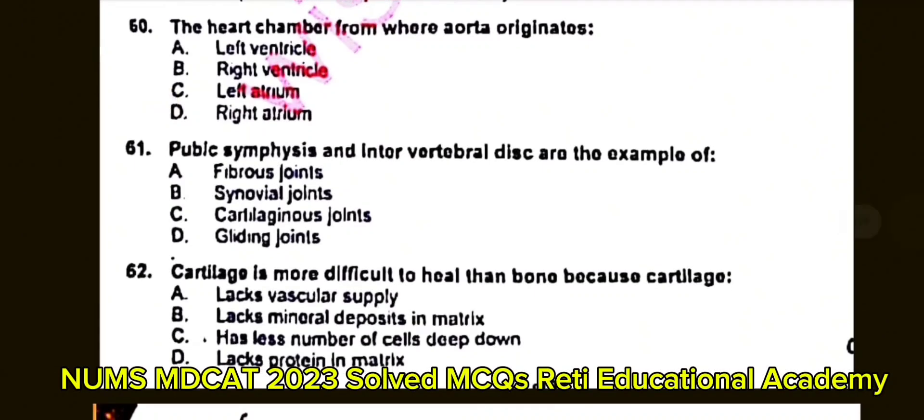Question number 61: Pubic symphysis and intervertebral discs are examples of? A. Fibrous joints. B. Synovial joints. C. Cartilaginous joints. D. Gliding joints. The correct answer is C: Cartilaginous joints.